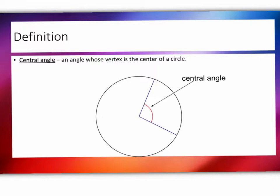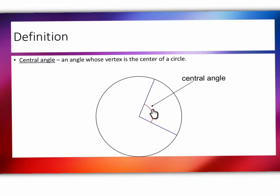Let's first discuss what a central angle is. A central angle is an angle whose vertex is the center of the circle. For this example, this would be a central angle here, and notice that it starts at the center of a circle.